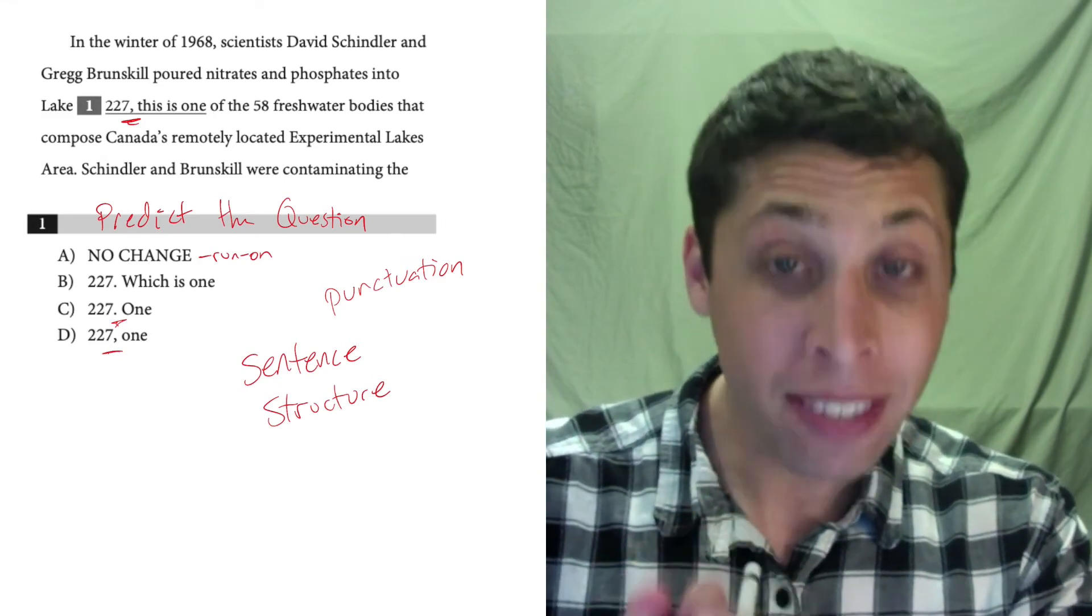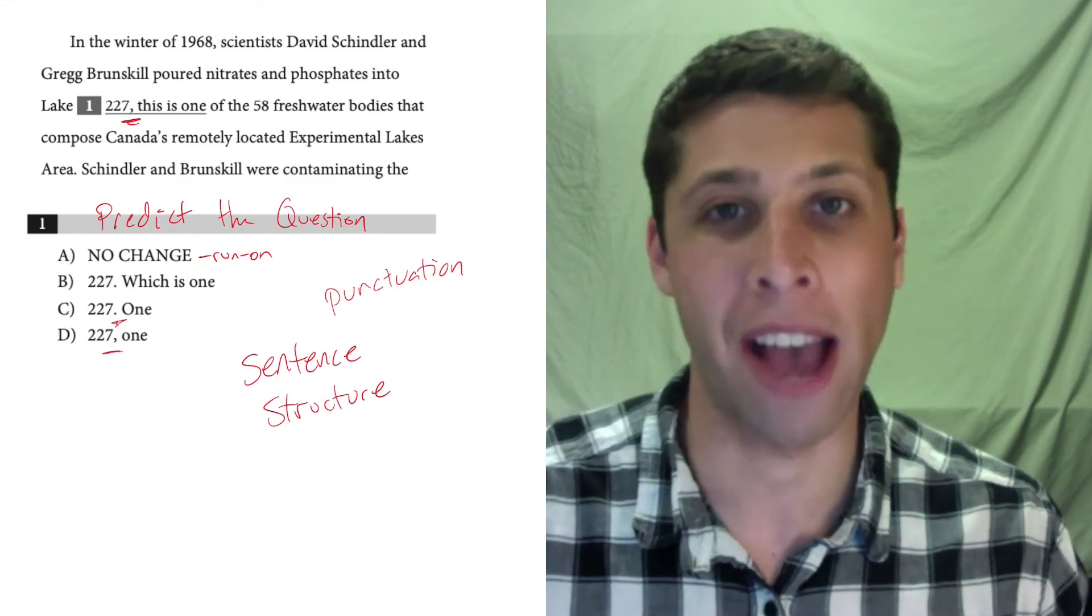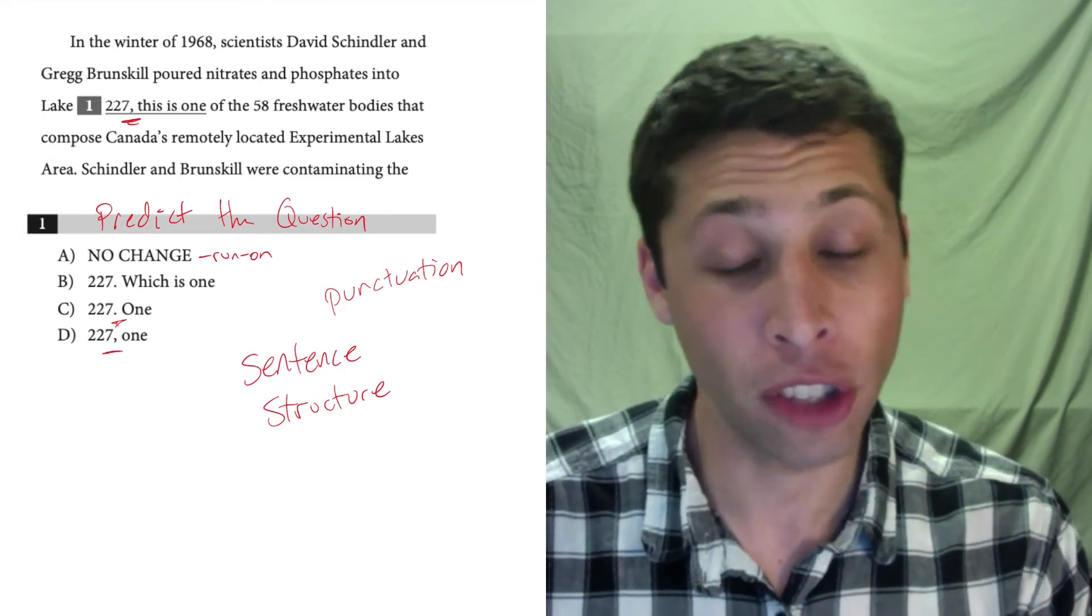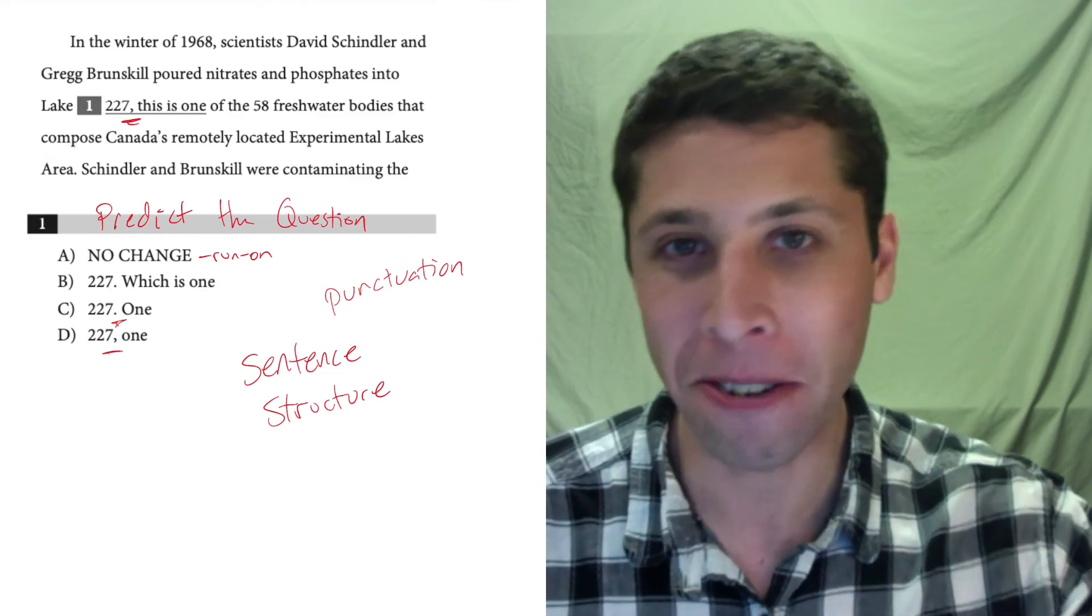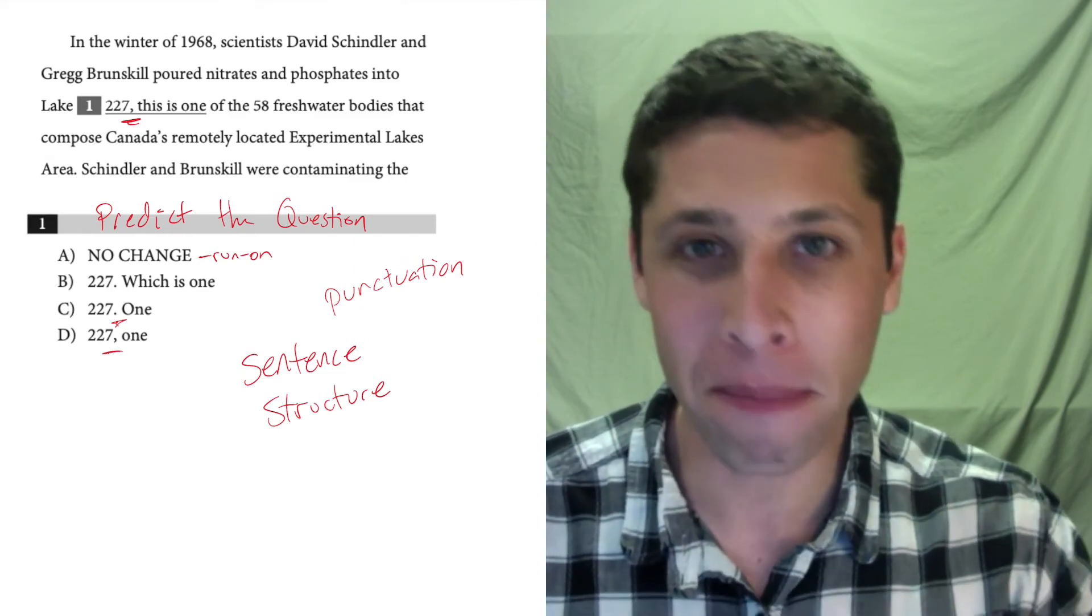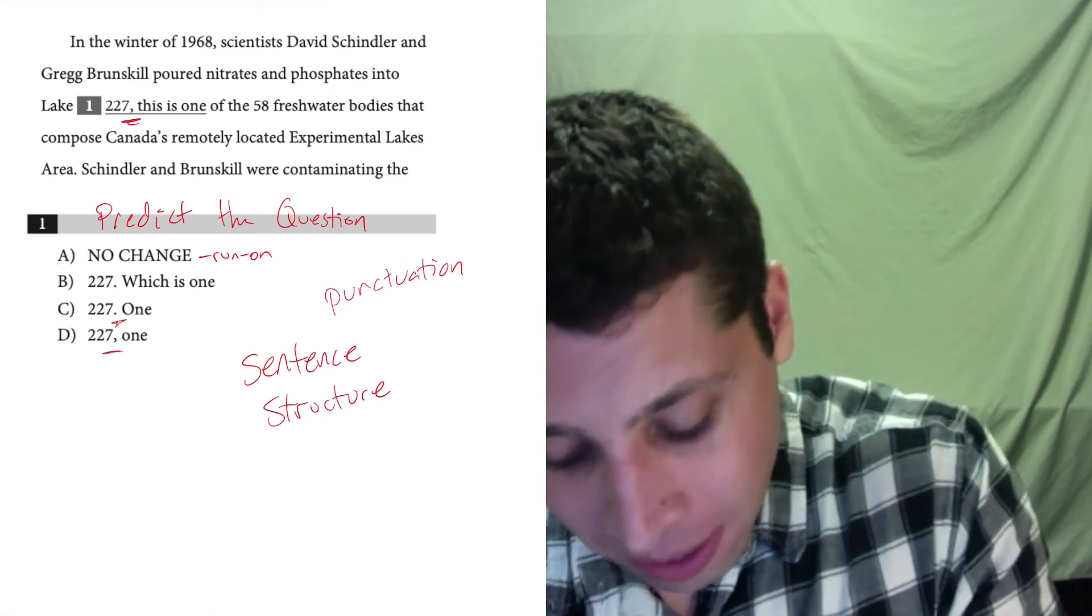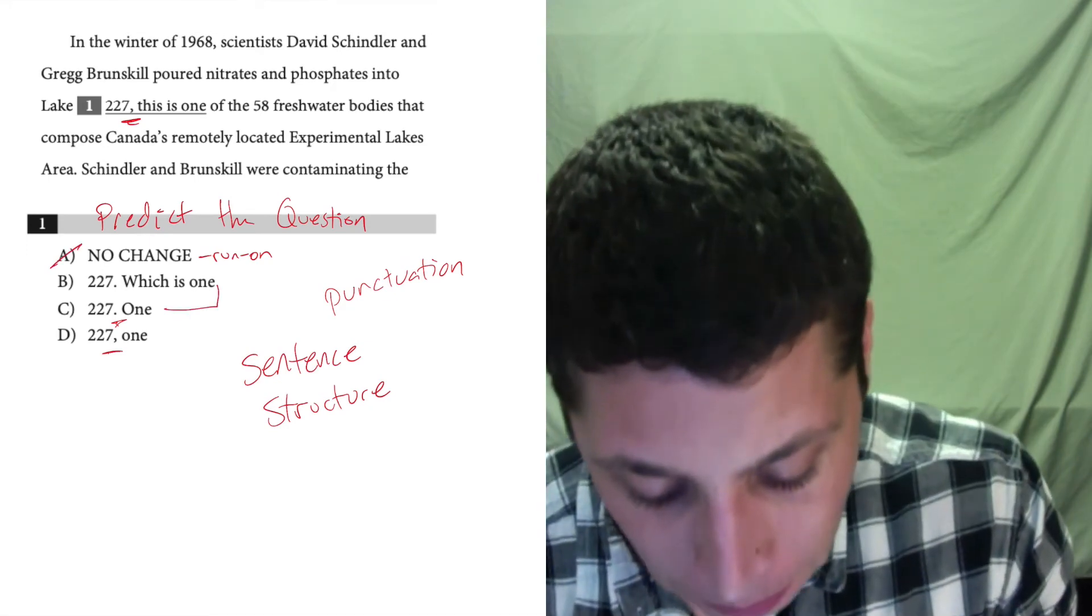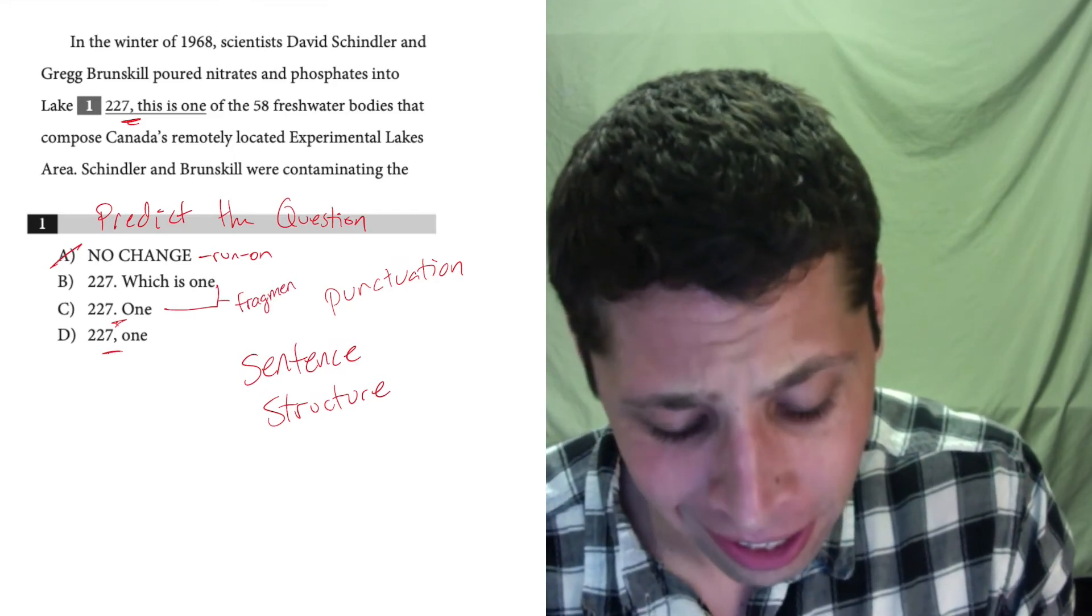Now, the best fix would be to just replace that comma with a period. However, we don't have that option because the one that replaces it with a period, they change the wording as well. And so just because a period fixes a run-on does not mean that the options with periods fix the run-on. In fact, both B and C cause a new problem, which is that they involve fragments.